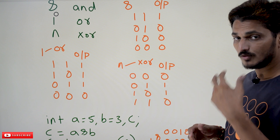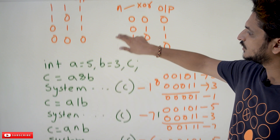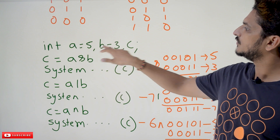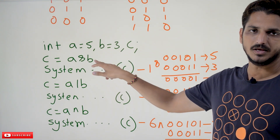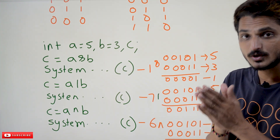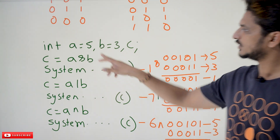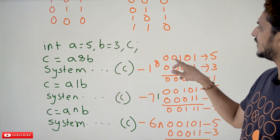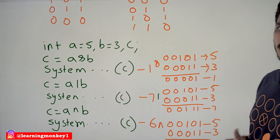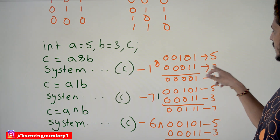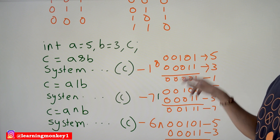Now we will do some examples for better understanding of bitwise operators. We have int A = 5, B = 3, and C = A & B. The binary value of 5 is 1, 0, 1 and the binary value of 3 is 0, 1, 1. So in 8-bit representation: 5 is 0,0,0,0,0,1,0,1 and 3 is 0,0,0,0,0,0,1,1.